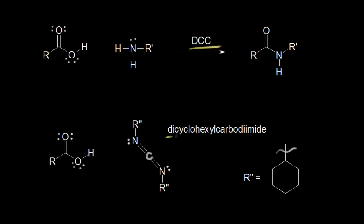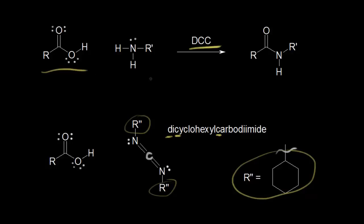DCC stands for dicyclohexyl carbodiimide — the D, the C, and the C. If the R'' group is a cyclohexyl group, then we would have DCC. If you start with your carboxylic acid and add an amine, the use of DCC allows your amine to function as a nucleophile and eventually form your amide as your product.